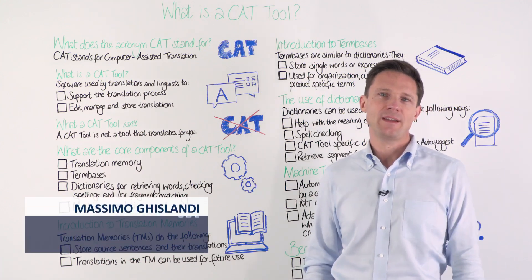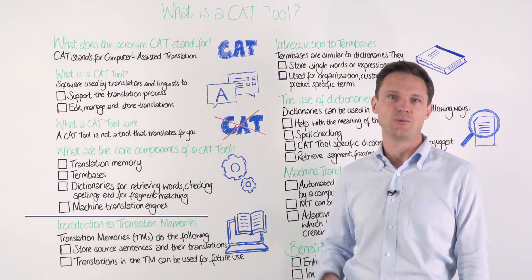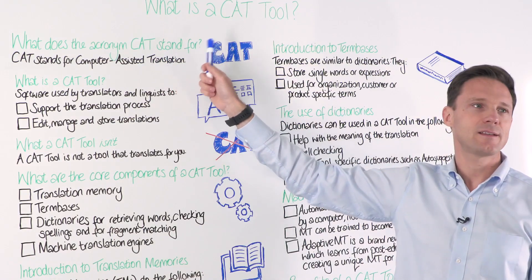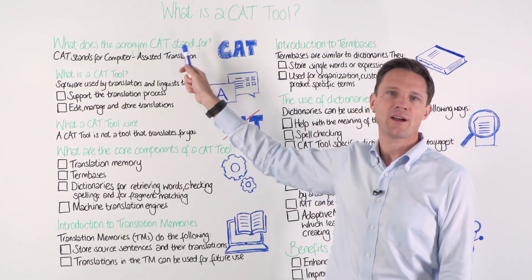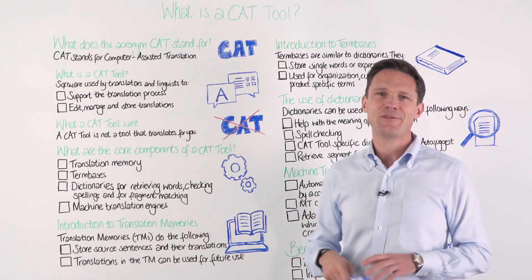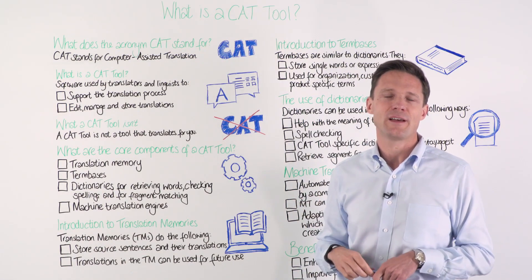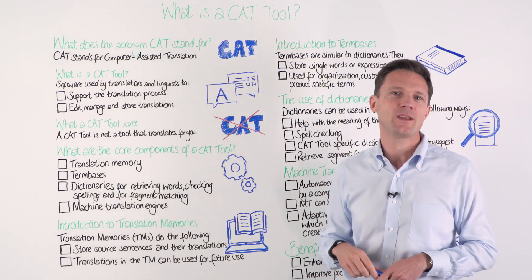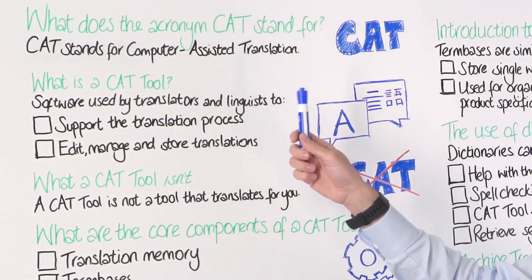Ciao, I'm Massimo from SDL and today I'm here to talk about CAT tools. What does the acronym CAT stand for? CAT stands for Computer Assisted Translation, and there are actually different explanations for what it actually means. Some people say computer-aided translation, but if you check on Wikipedia, that's what you'll find.